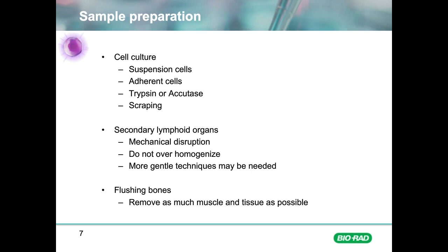If you are using adherent cells, you will have to consider the best method to detach the cells from the flask. Commonly, trypsin is used to create single-cell suspensions, but this can be damaging if left on the cells too long and may not be the best method for some surface markers, as trypsin can cleave epitopes resulting in no or reduced staining. More gentle methods such as Accutase are used at a lower concentration than trypsin and preserve more epitopes. After detachment, cells can be washed and resuspended at the right concentration.